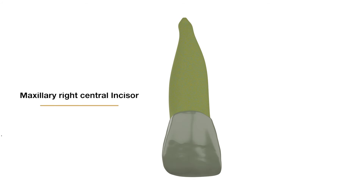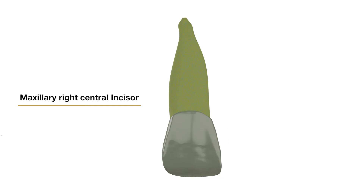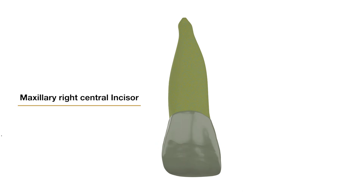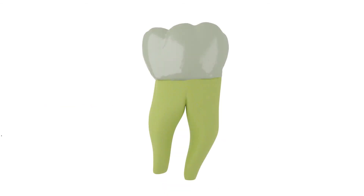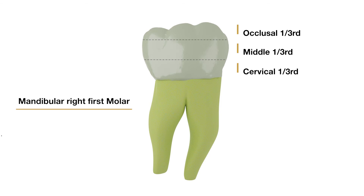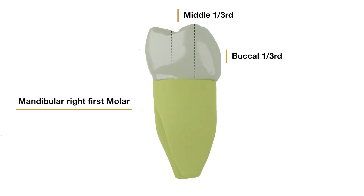The crown may be divided into thirds in three directions. For anterior teeth: incisocervically into incisal, middle, and cervical one-thirds; mesiodistally into mesial, middle, and distal one-thirds; and labiolingually into labial, middle, and lingual one-thirds. For posterior teeth: incisocervically into occlusal, middle, and cervical one-thirds; mesiodistally into mesial, middle, and distal one-thirds; and buccolingually into buccal, middle, and lingual one-thirds.